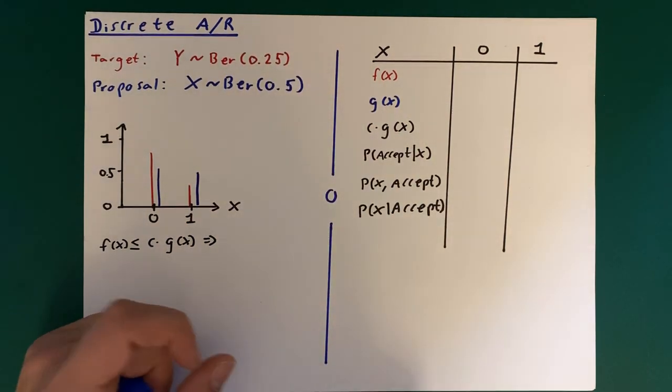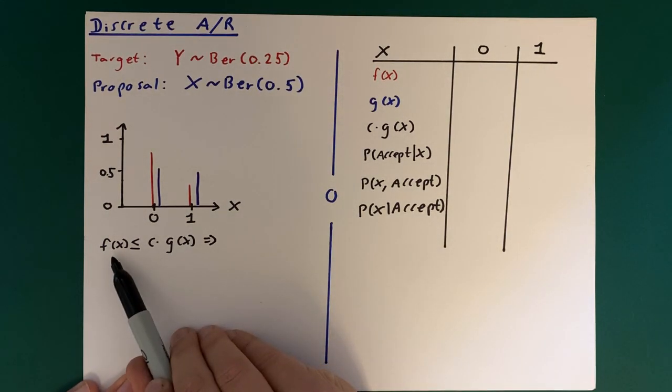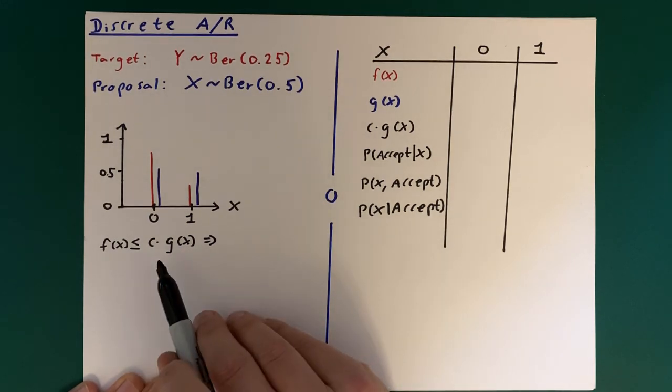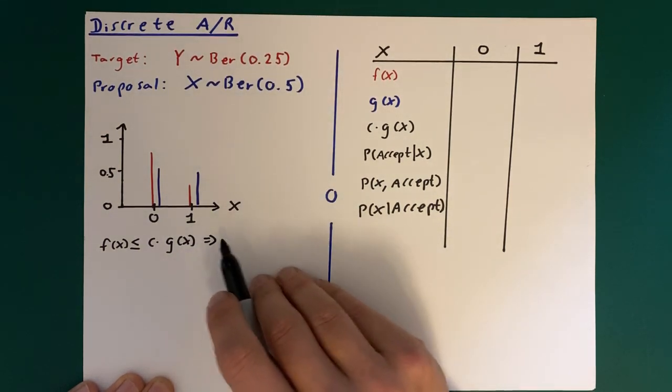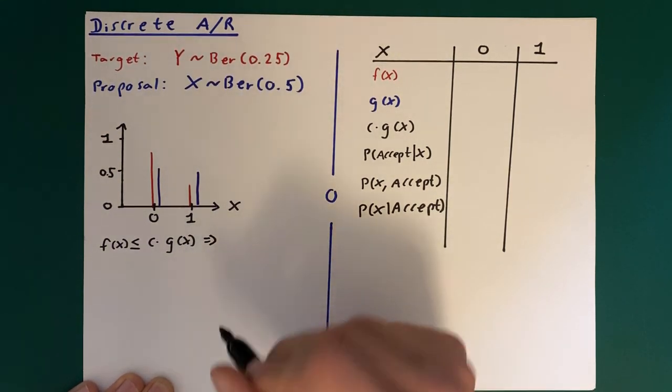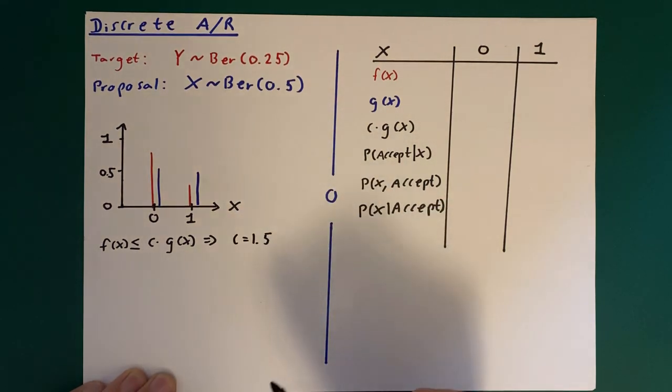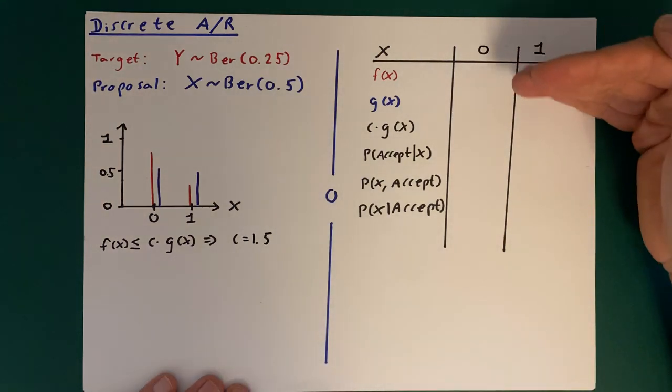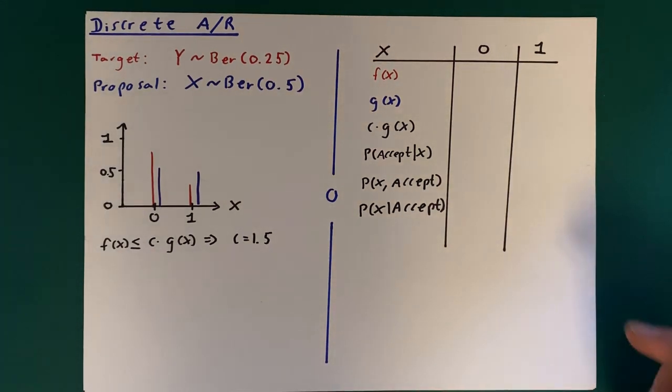And then we will quickly note that we have to have that f is less than or equal to the envelope c times g(x). So c times g(x), and that then for our case here implies that c should be 1.5, right?